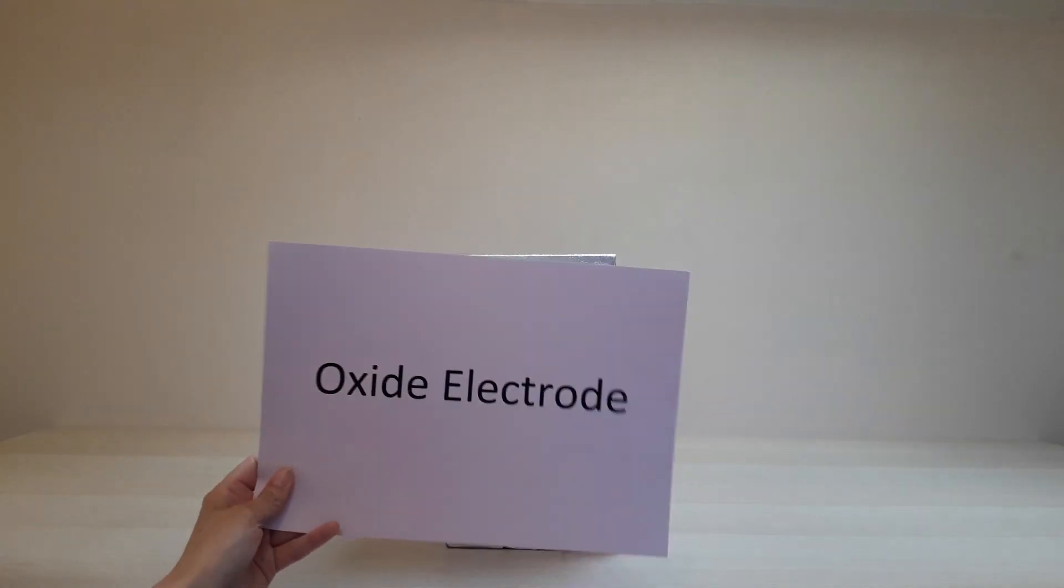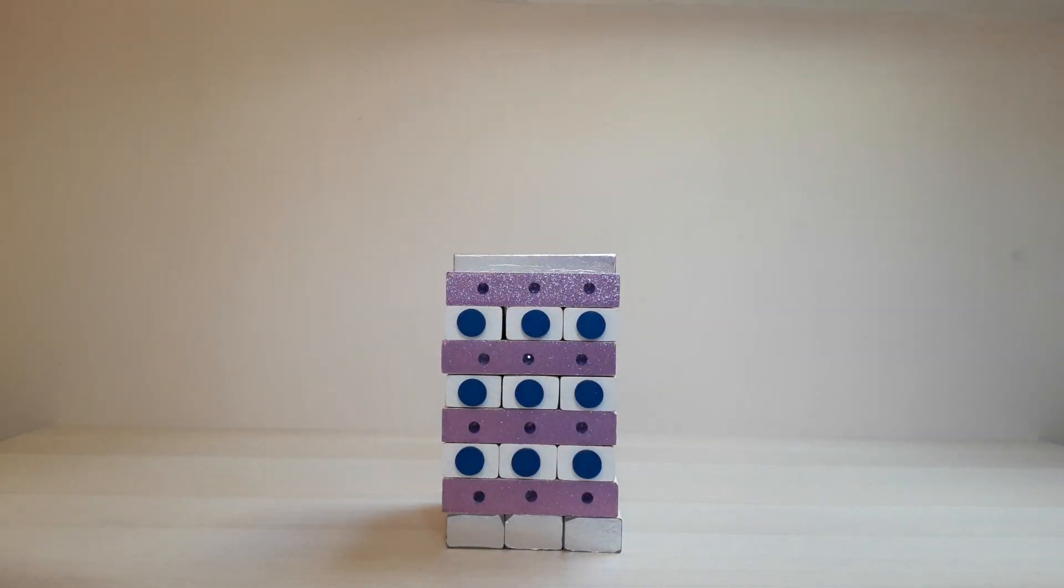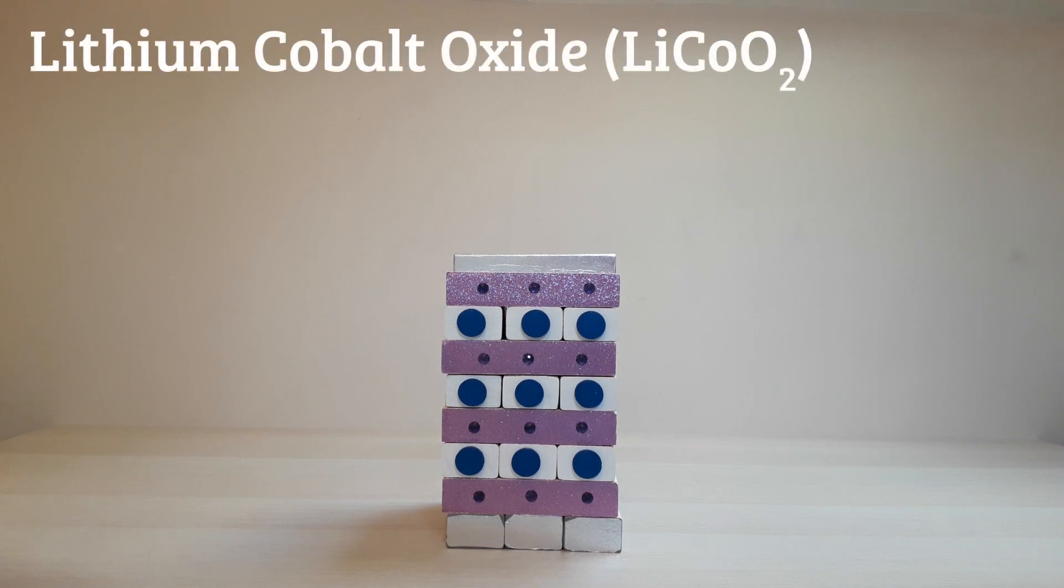Before running this demonstration we need to understand our key and what each block represents. Let's consider the oxide electrode first. Before charging, this electrode houses our lithium ions. A common material in use for rechargeable lithium batteries for this electrode is lithium cobalt oxide.